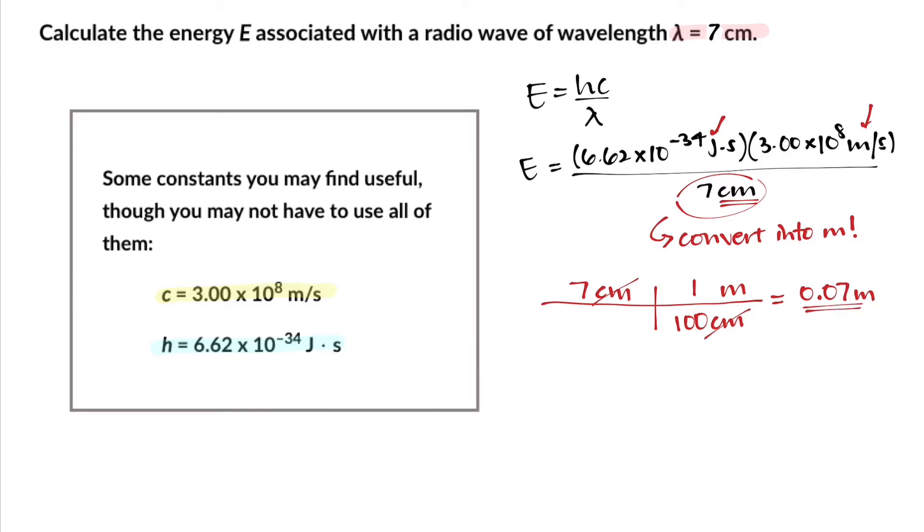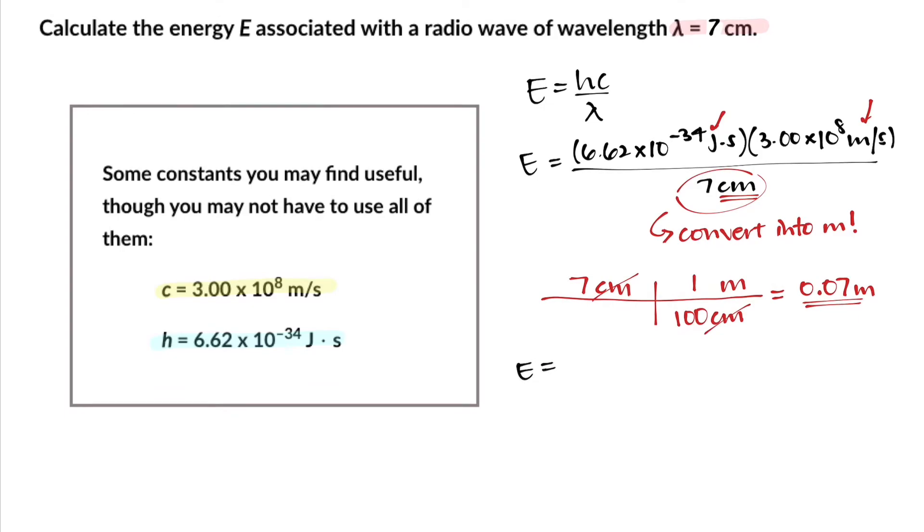So this is the version of the number we're going to use in our problem E = hc/λ. Let's go ahead and plug that in. We're going to keep 6.62 × 10^-34 joules times seconds and the speed of light 3 × 10^8 meters per second as is, and divide that by 0.07 meters.